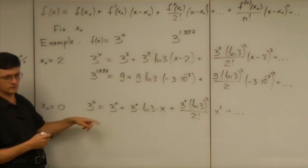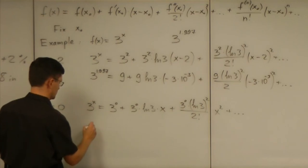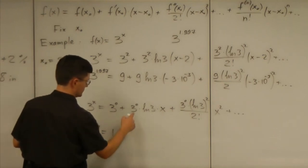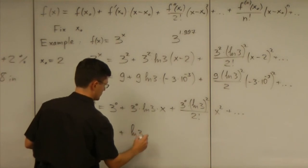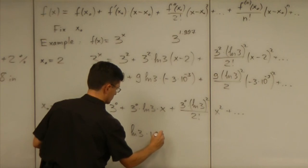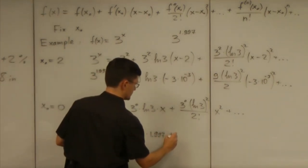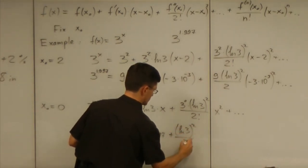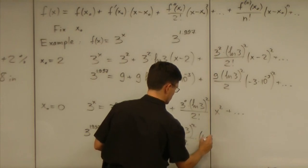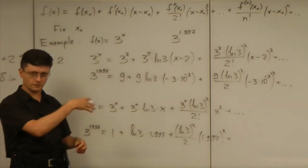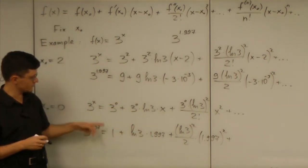And in this base, I will have what? 3^1.997 equals 1 plus natural log of 3 times that number plus (natural log of 3) squared over 2 times that number squared, and then that number cubed. So what's the difference?